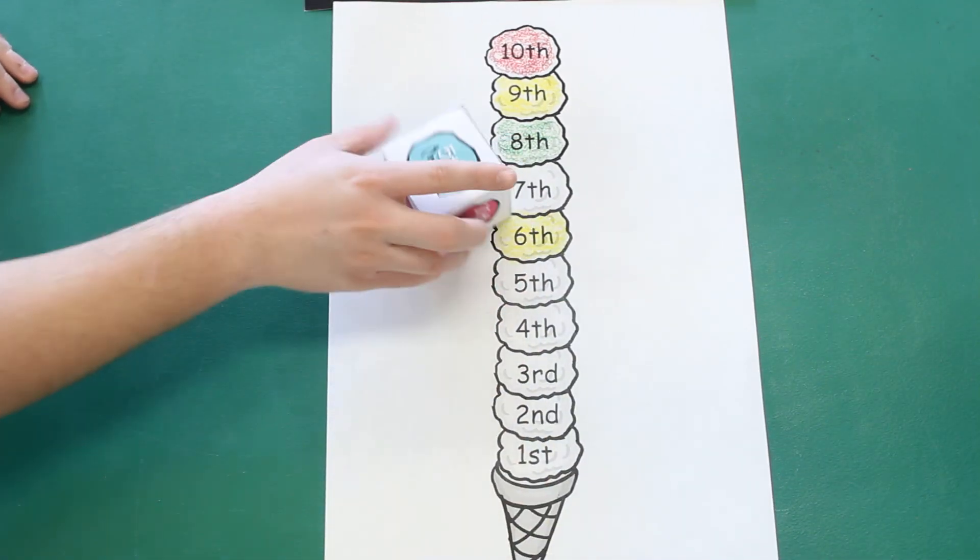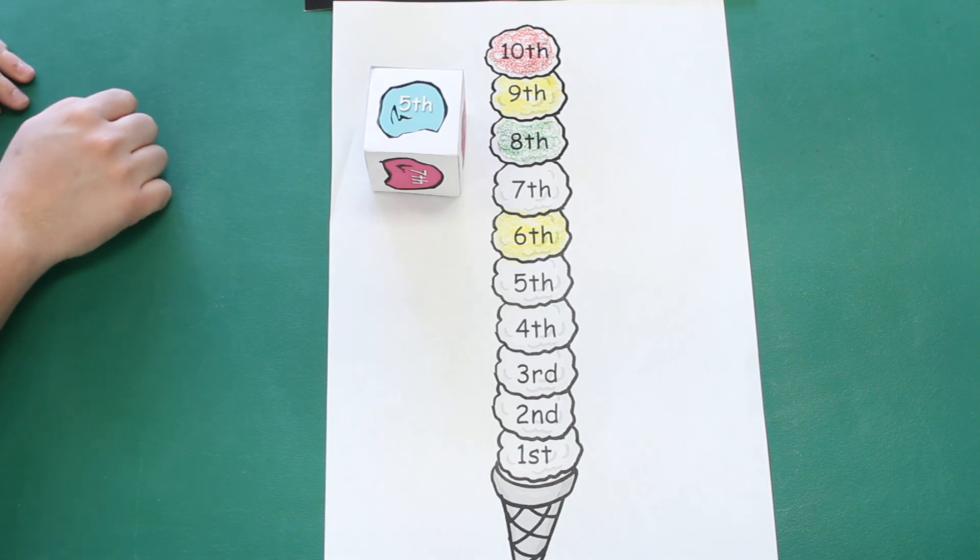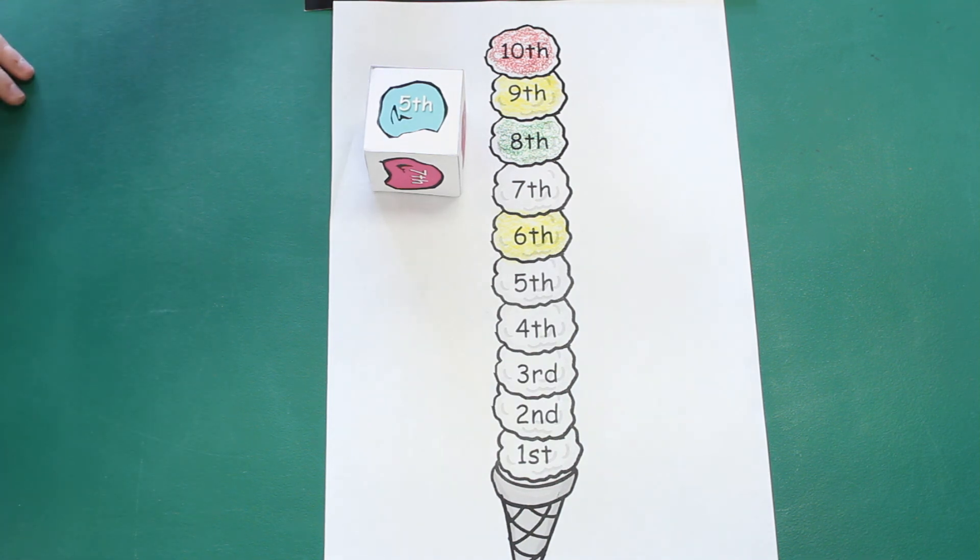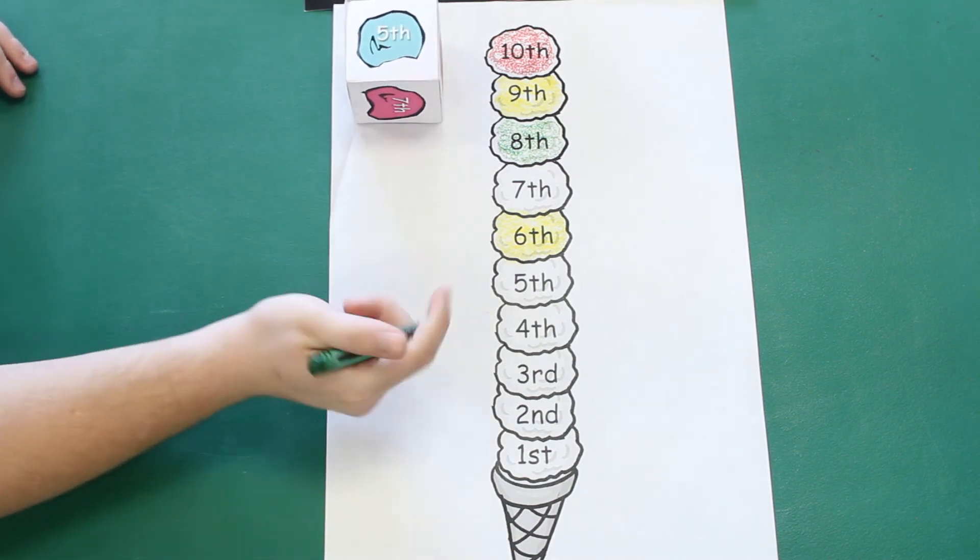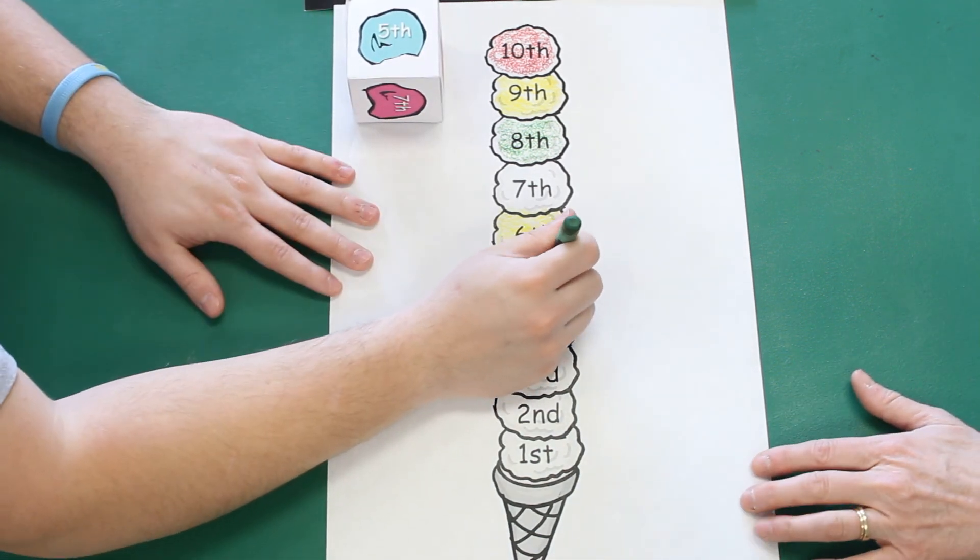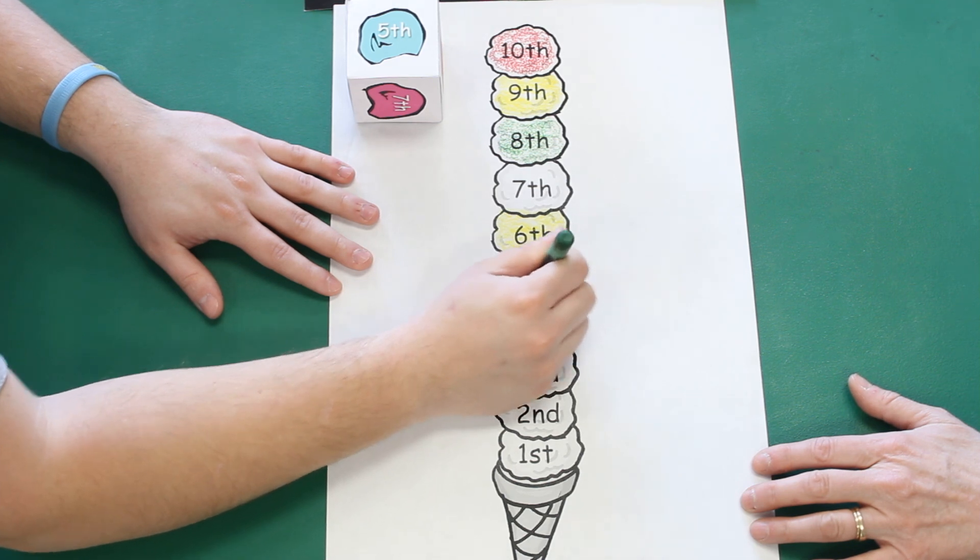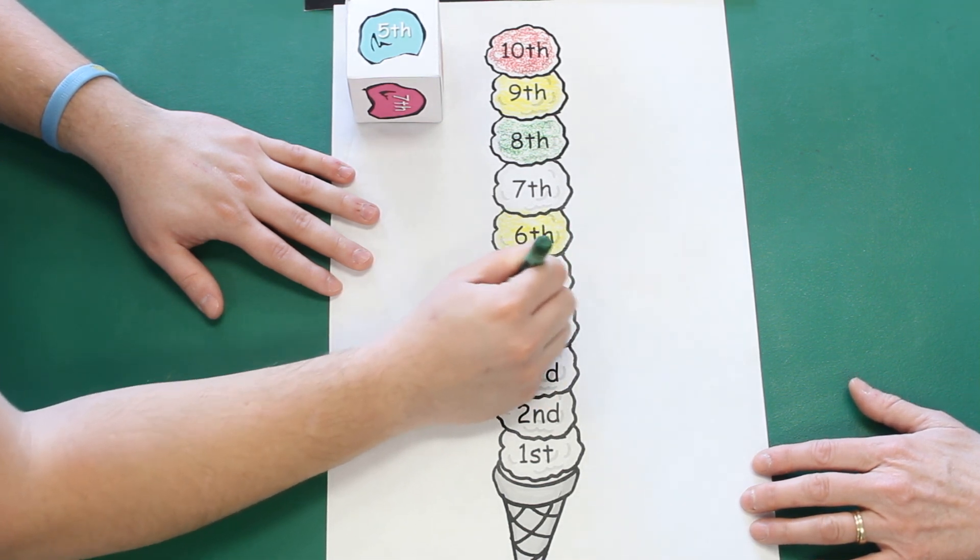Oh, I got the fifth scoop. And you know what color it's going to be? Green. You already colored one green. I already did color one green and it was the fifth one. Mrs. Reagan's going to roll next.